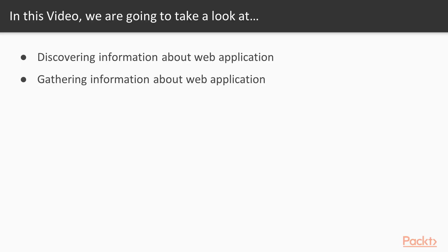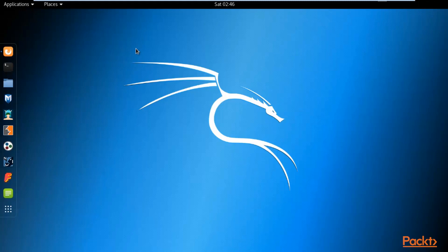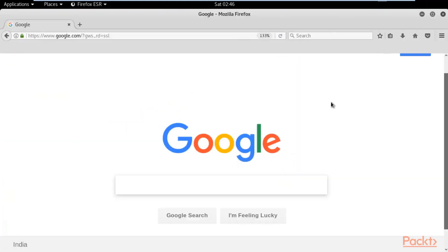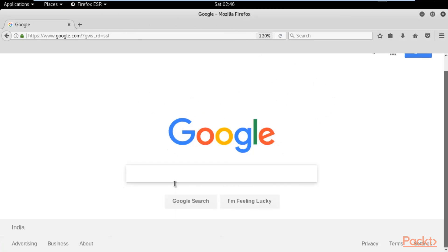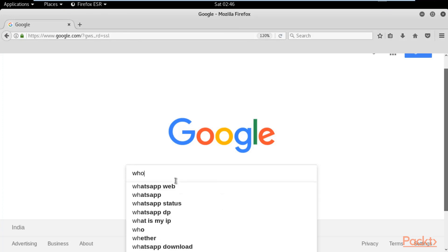We are starting with discovering the infrastructure of a web application. In the first video of Section 2, we will learn techniques to discover and gather information about a web application. To do that, open the browser of your operating system — you can use Windows or Kali Linux. I'm using Kali Linux here, and I've opened Firefox with Google.com inside it.